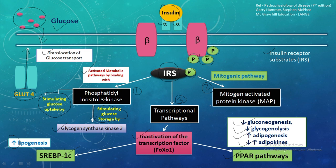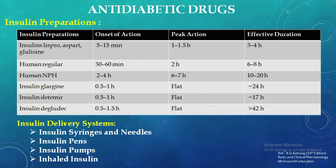This is the overall mechanism of how insulin works in the body. Now we will discuss the different types of insulin preparations, which are classified based on their onset of action, peak action, and effective duration — the pharmacokinetic profile of insulin.